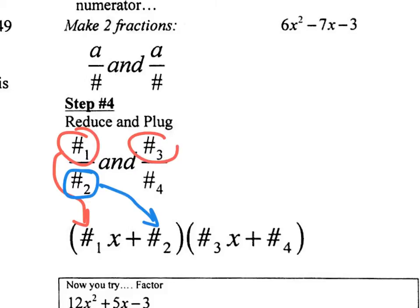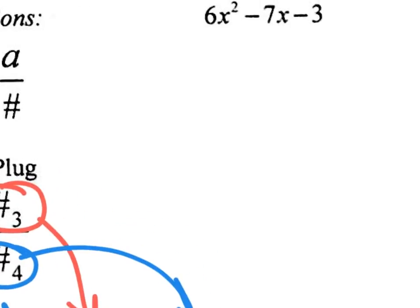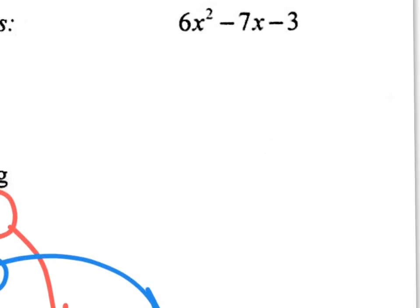Once again, the top number on the fraction goes in front with the X, and the bottom number goes out here at the end. You might want to draw those arrows in your notes. So the only way to get good at this is to actually practice it using the steps. So let's take a look at this example right here, and let's go through the steps.